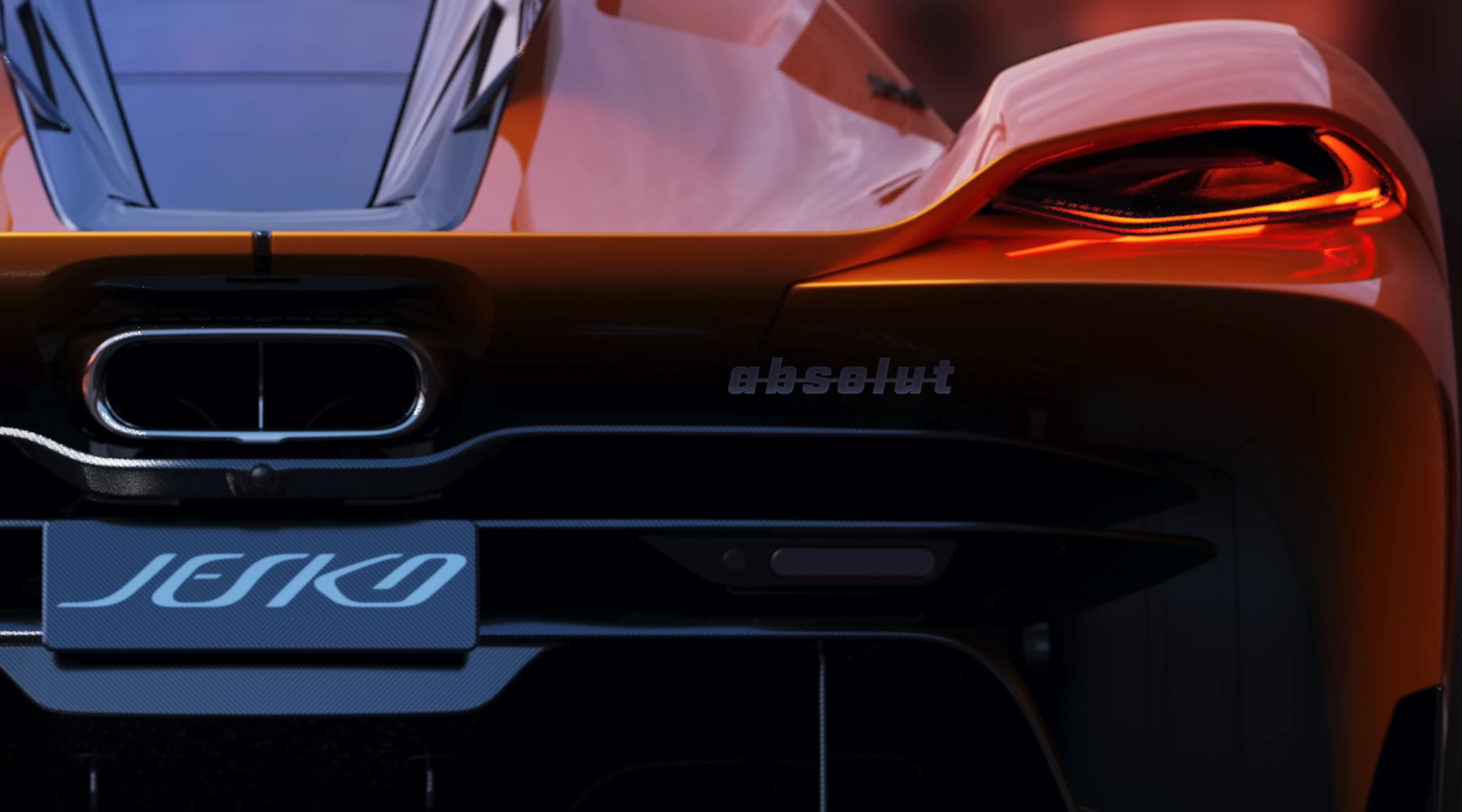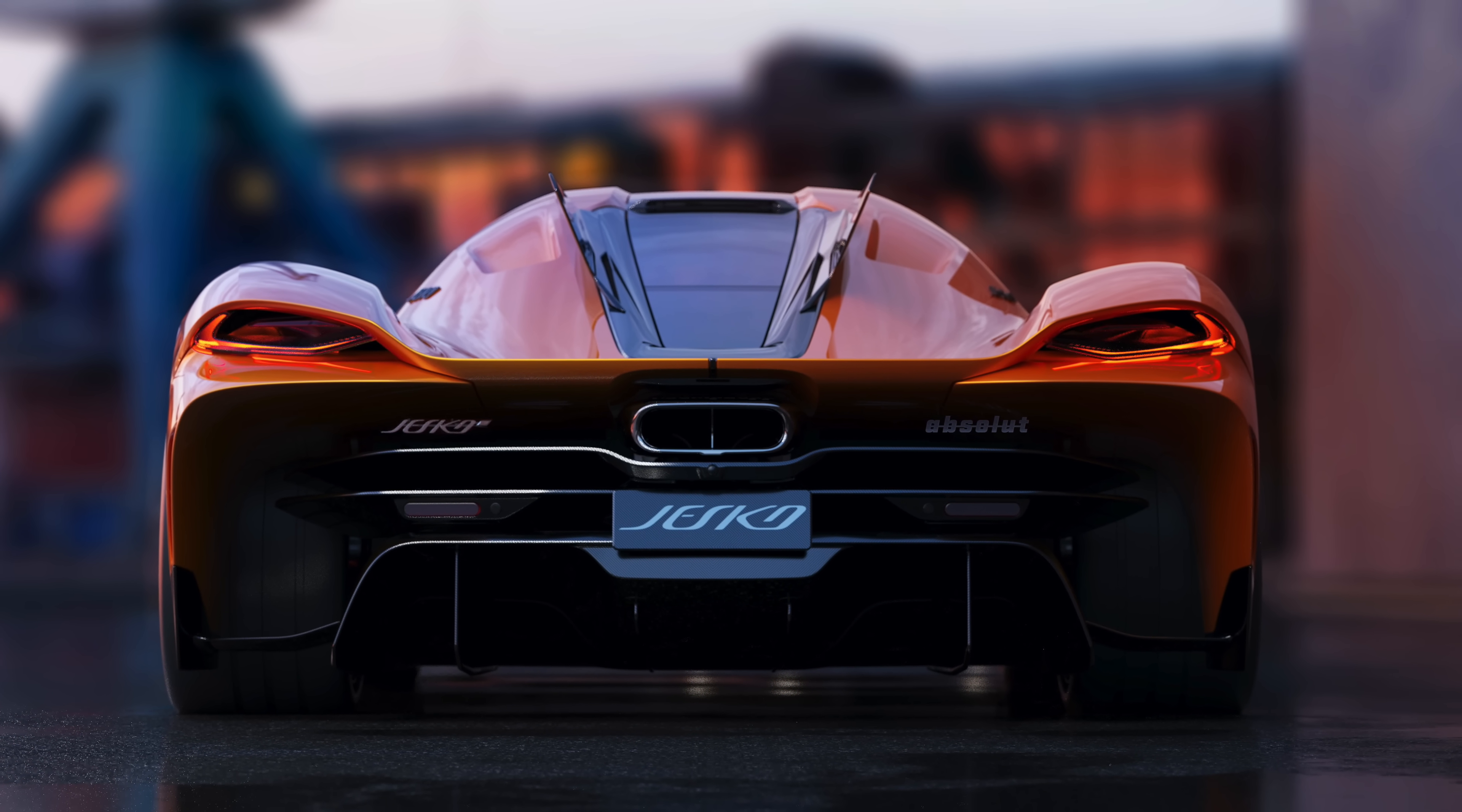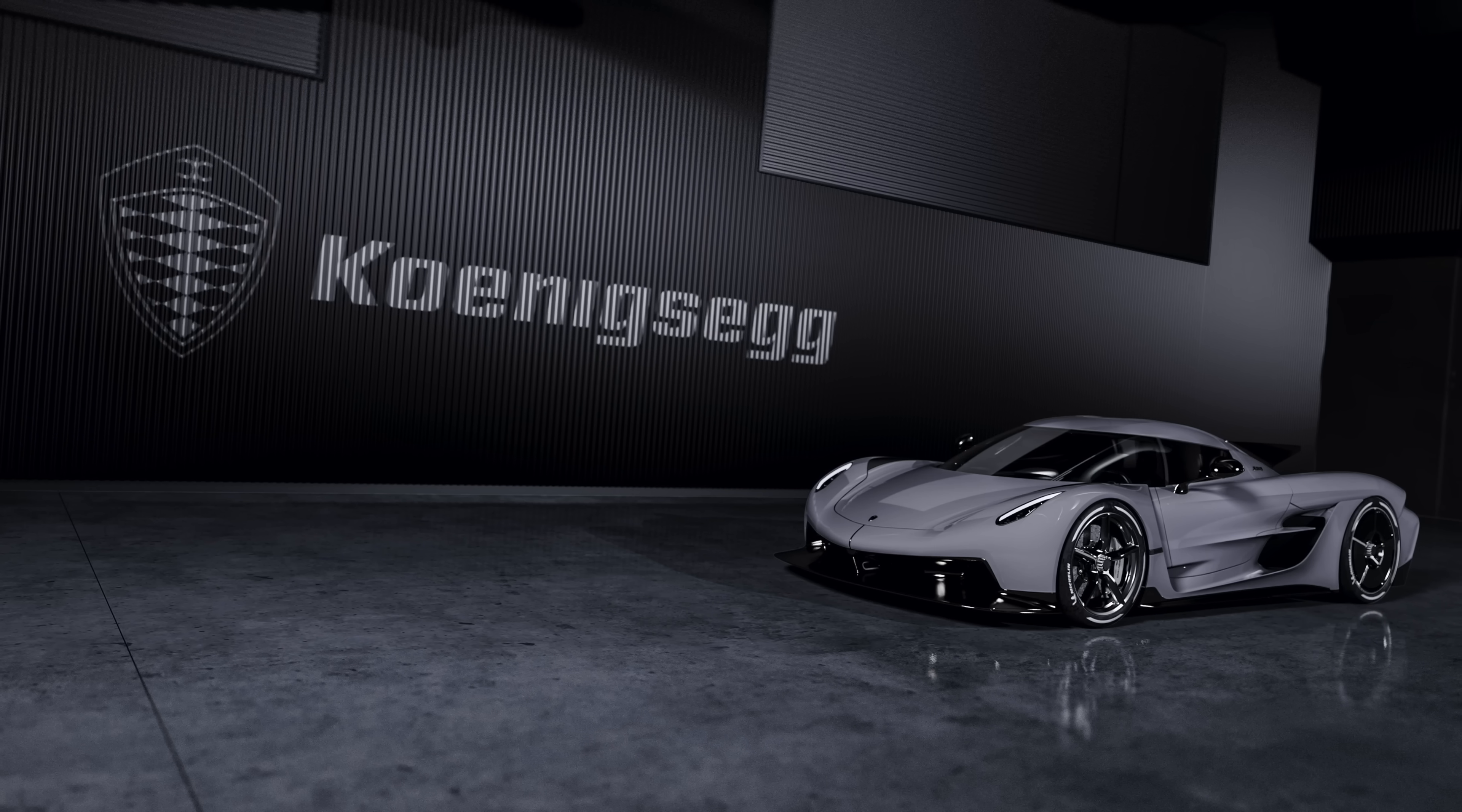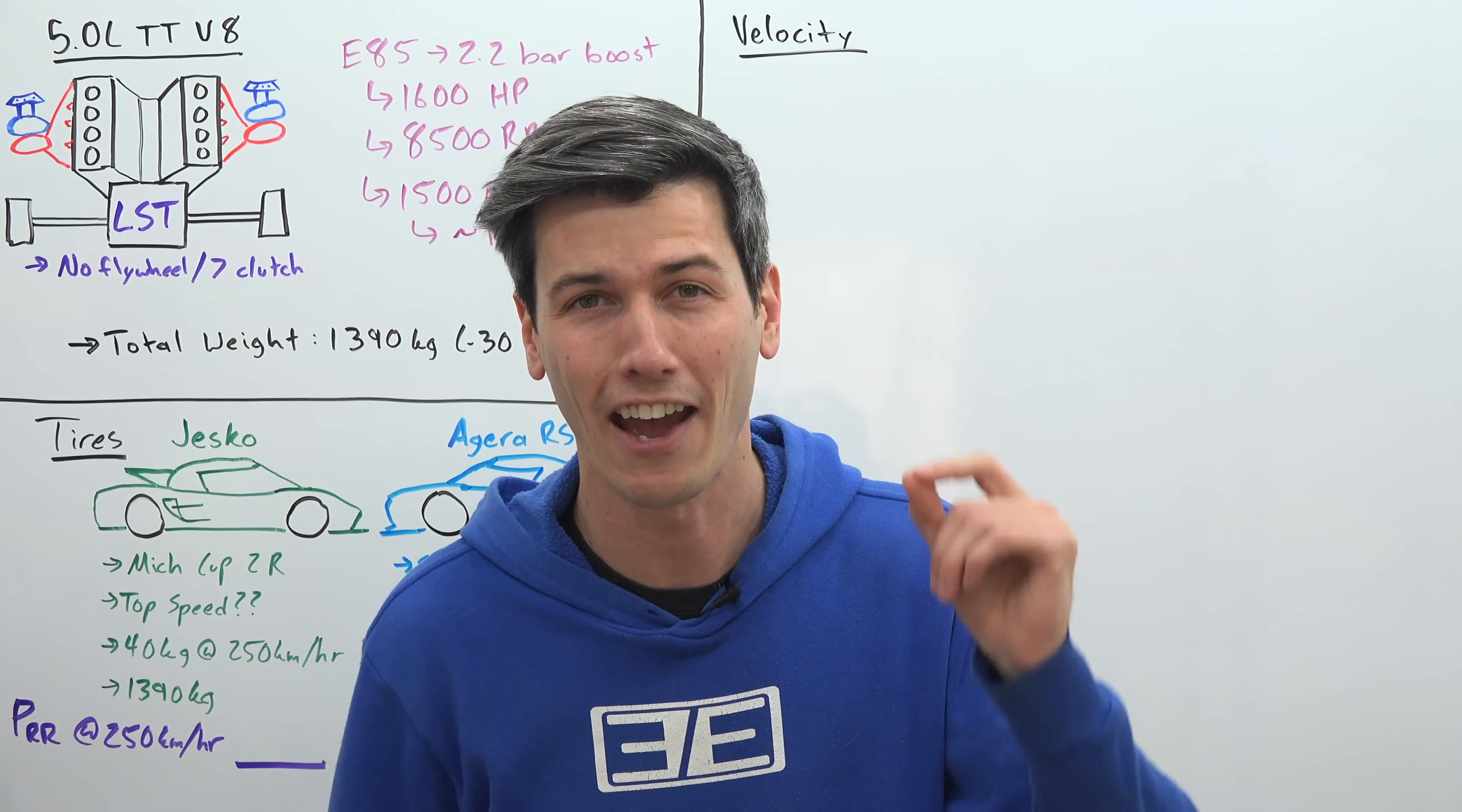Hello everyone and welcome. In this video we are talking about the Koenigsegg Jesko Absolute, which is the fastest car Koenigsegg has ever made. Once it actually comes out, it may be the fastest road-going car out there, and Koenigsegg says they are done chasing speed records after this car, so it will be the fastest car they ever make.